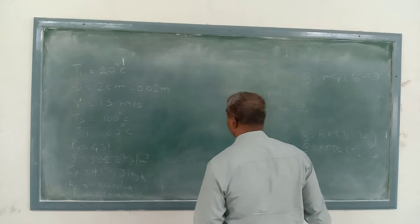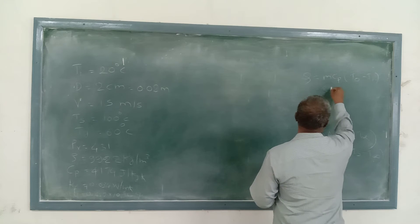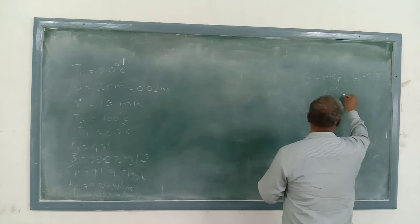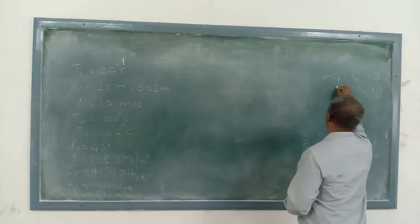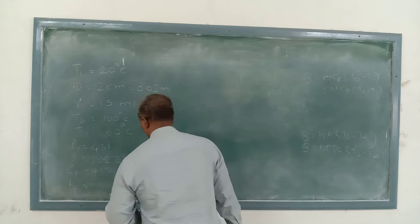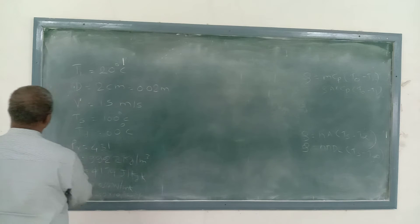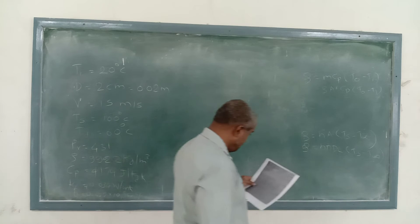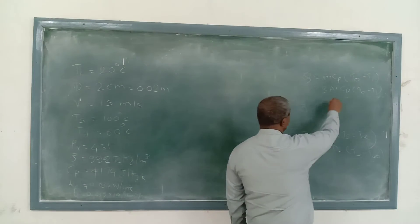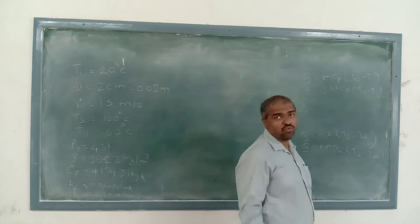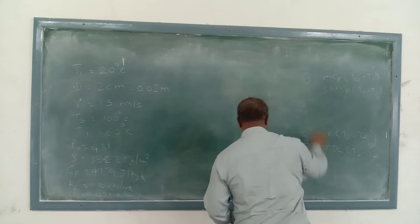Mass is not directly mentioned, so we use m = ρ·A·V, substituting the density, cross-sectional area A = (π/4)·D², and velocity. The diameter is given, so we can easily calculate the value of Q.